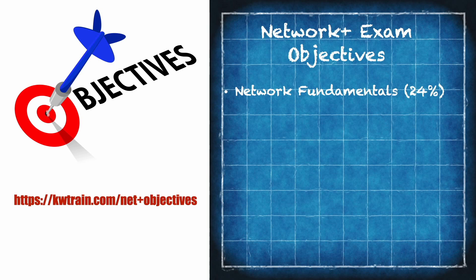24% of the exam is going to cover network fundamentals. Under this category, we have topics such as the OSI model, different network topologies, cabling, IP addressing, IPv4, IPv6, common network protocols and the port numbers they use — is it a UDP port or a TCP port? We talk about network services such as network address translation and network time protocol. We even get into data center components and cloud.